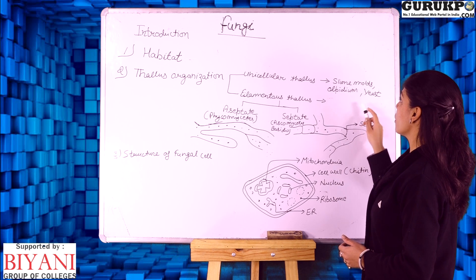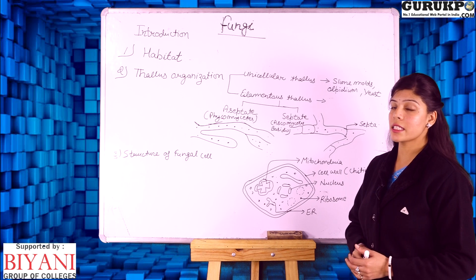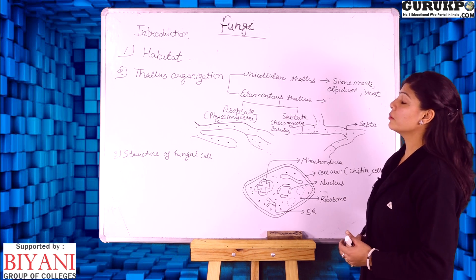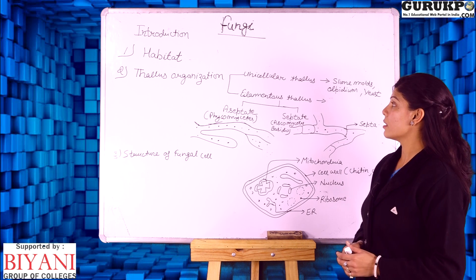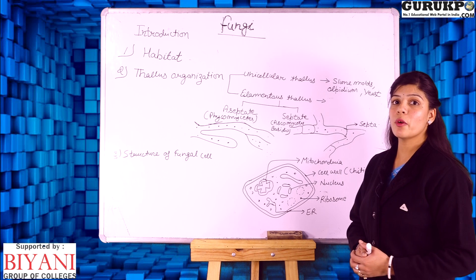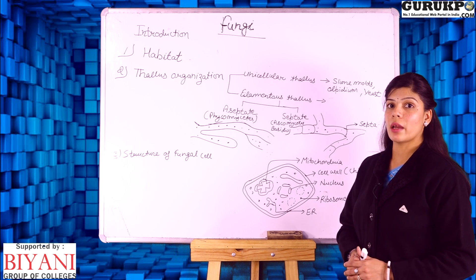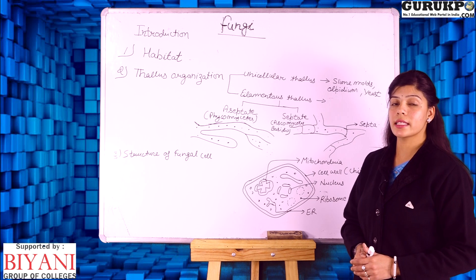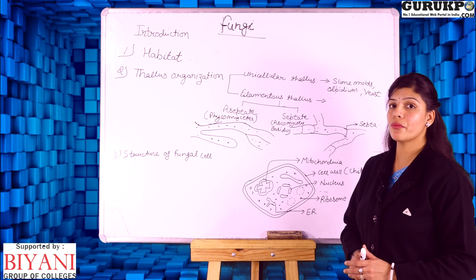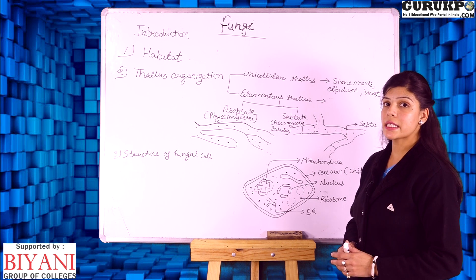In slime molds, unicellular thallus is present without a cell wall, whereas in yeast and Olpidium the thallus is present with a cell wall. The second category is filamentous thallus. The plant body of true fungi is made up of thin thread-like filamentous structures called hyphae, and all these hyphae combine together to form a net-like structure called mycelium.